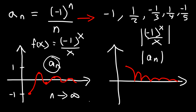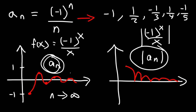That's the basic idea behind the absolute value theorem for sequences. If you can show that the absolute value of a_n converges, then a_n will also converge as well.